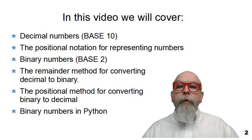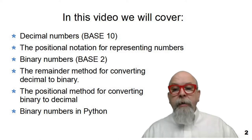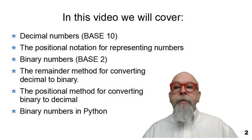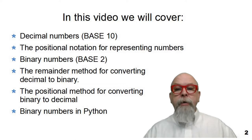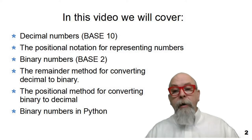In this video we will be covering what decimal numbers are, base 10 numbers, the kind of numbers you're used to every day. The positional notation for representing numbers will go into binary numbers, base 2 numbers, which are how the computer actually counts. We'll cover the remainder method for converting decimal to binary. We'll cover the positional method for converting binary back to decimal. And I'll show a couple of functions that will let you do some binary stuff within Python, including how to create a binary constant.